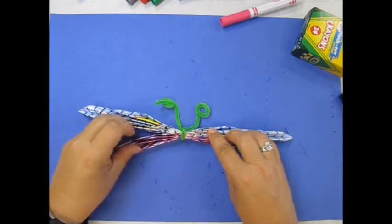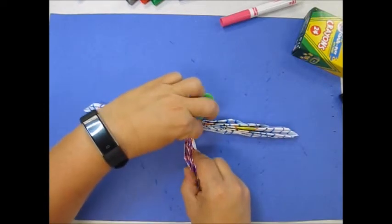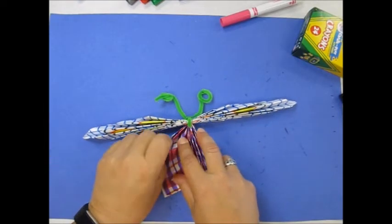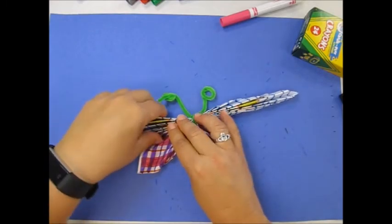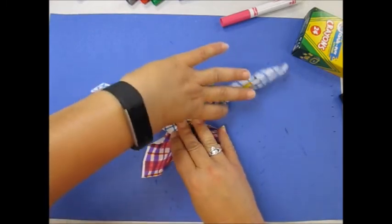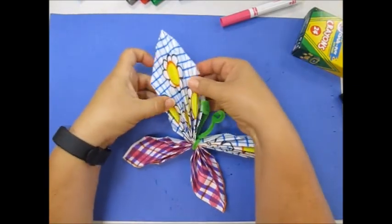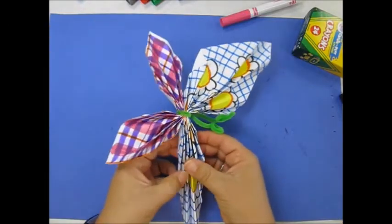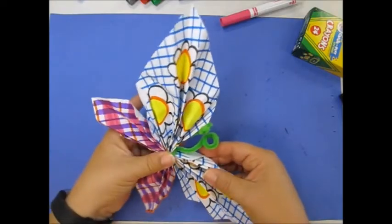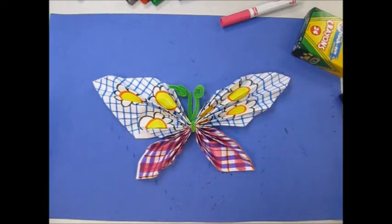Then it's time to open up the wings. I take the bottom wing, bring them down, crease them, and then open up the wings. Take the top wings and I bring them up to the top, and open up the wings. There is your pattern butterfly. Have fun.